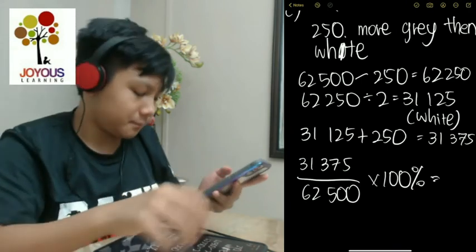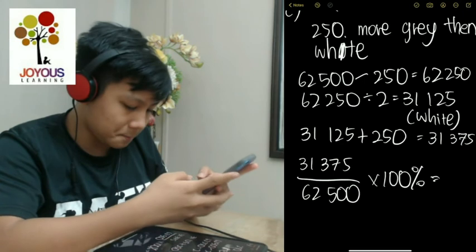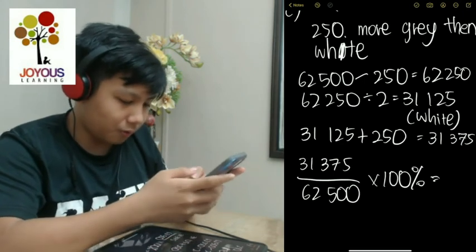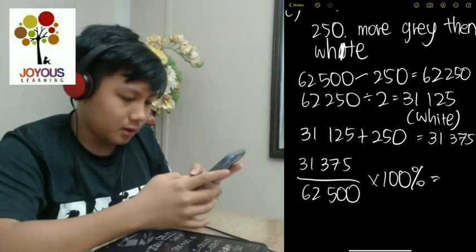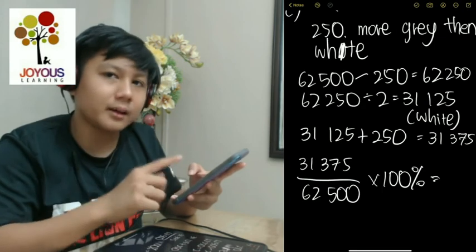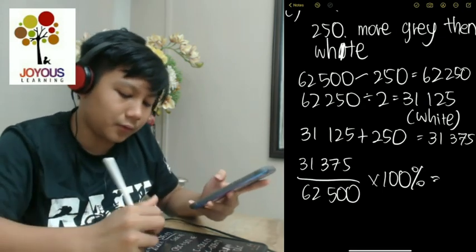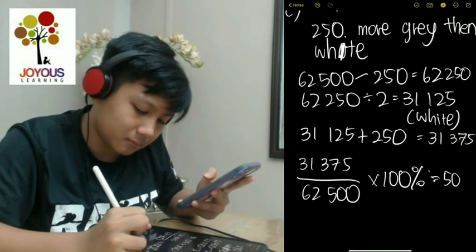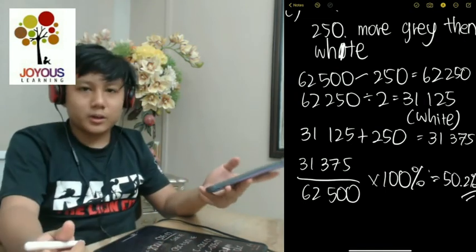So anyway, 31,375 over 62,500 times 100%. But in a calculator, don't put the percentage sign. It's equal to 50.2%. And that's the answer for question C.